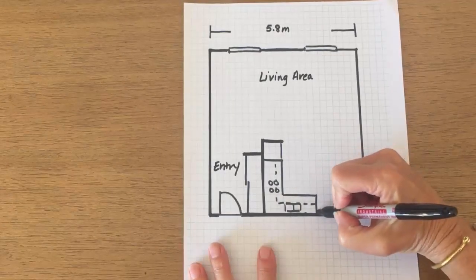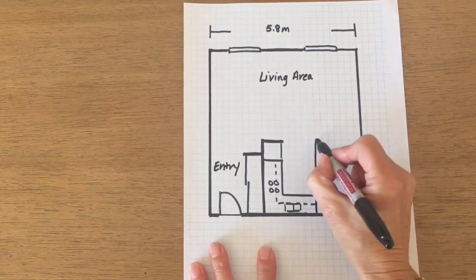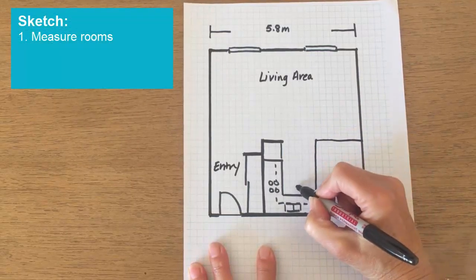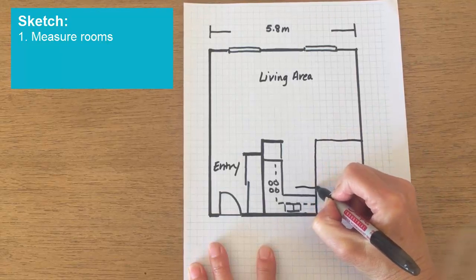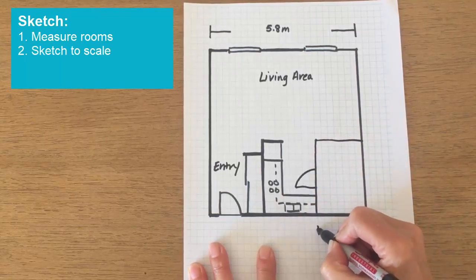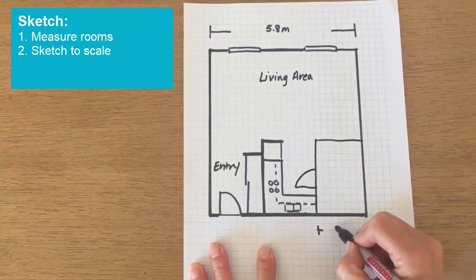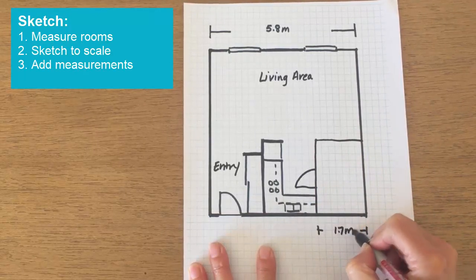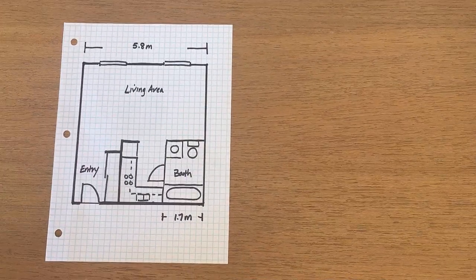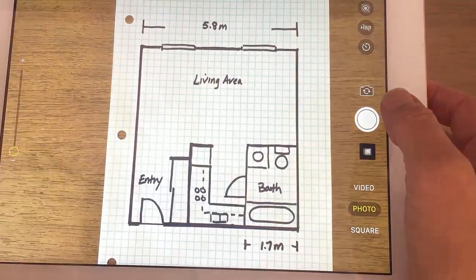Another option is to sketch up the floor plan yourself and add a couple of measurements for scale. First, measure up the rooms — you can use a tape measure, a laser measurer, or a measuring app on your phone. Then sketch the floor plan to scale on any type of paper, and finally add in several of the measurements. When the sketch is complete, simply snap a photo of it using your phone or tablet.